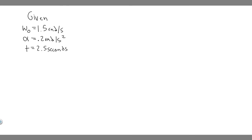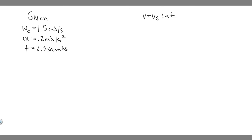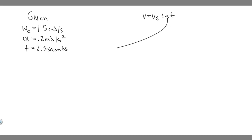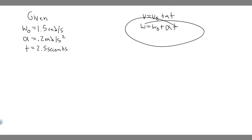Think about these just like normal kinematic equations. You know the normal one: V equals V_0 plus A times t. What we do is replace velocity with omega, the angular velocity, and replace A, the acceleration, with alpha, the angular acceleration. T is just the same. So the rotational version is: omega equals omega_0 plus alpha times t.